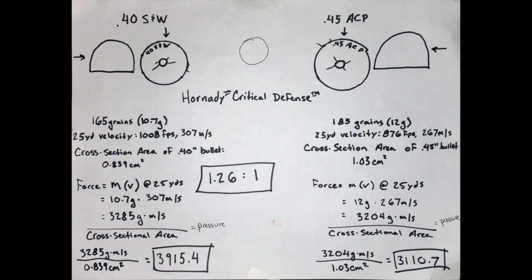Force equals mass times velocity. The 40 caliber Hornady Critical Defense has a mass of 10.7 grams and velocity of 307 meters per second at 25 yards, giving us 3285 grams-meters per second. Divide that force by the cross-sectional area—the size of the circle of material that round impacts.